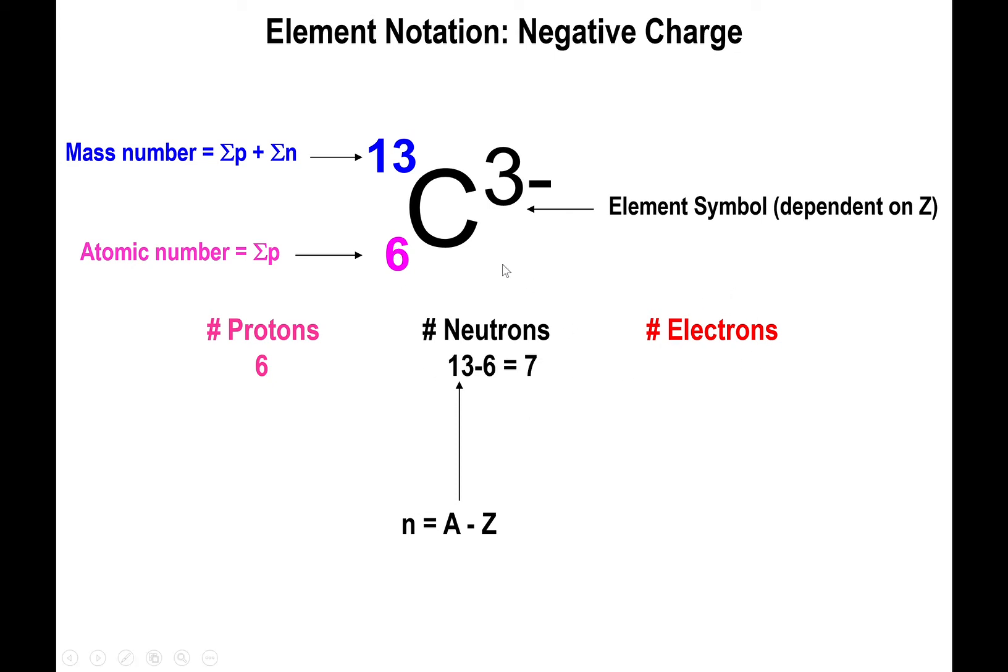And the number of electrons is, once again, the atomic number minus the charge, which is the same thing as saying 6 minus -3, which is the same thing as 6 plus 3. And 6 plus 3 is 9. So this tells you that you have 9 electrons in this particular system.